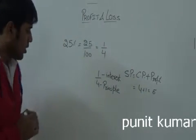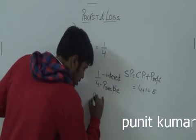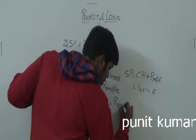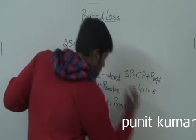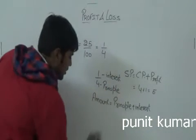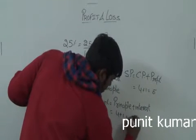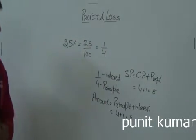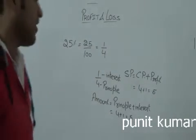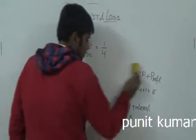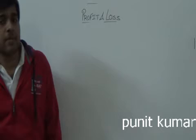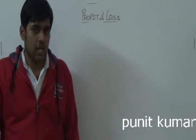Just as Amount equals Principal plus Interest, here SP equals CP plus Profit. The placement is the same — 5 corresponds to Amount, 4 to Principal, and 1 to Interest. With this method, you don't need to memorize any formulas.